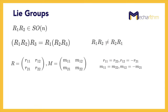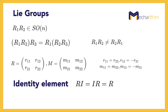Another property of this mathematical group is that there exists an identity element in SO(N) such that the multiplication of R with this identity element is the same as R. Note that the identity matrix I can be viewed as a trivial example of a rotation matrix, visualized by imagining the first frame aligned with the reference frame.